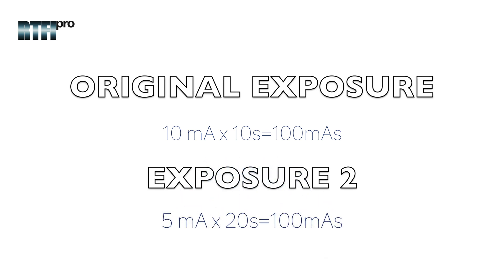Now let's review this example by reducing the milliampere by half and doubling the exposure time, which would be 5 MA and an exposure time of 20 seconds, equaling 100 milliampere seconds. Here, we reduced the original exposure milliampere from 10 to 5 MA, but doubled the exposure time from 10 to 20 seconds to produce the same 100 milliampere second exposure. As a result, the product of milliampere and exposure time have a direct proportional relationship with the quantity of x-rays produced.